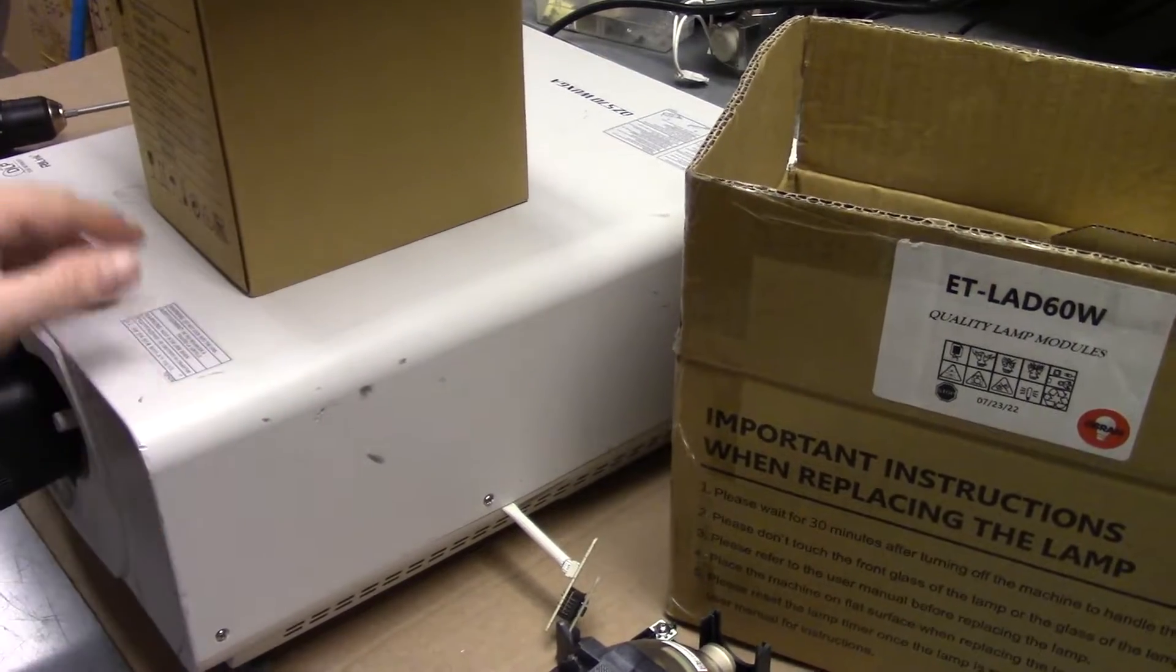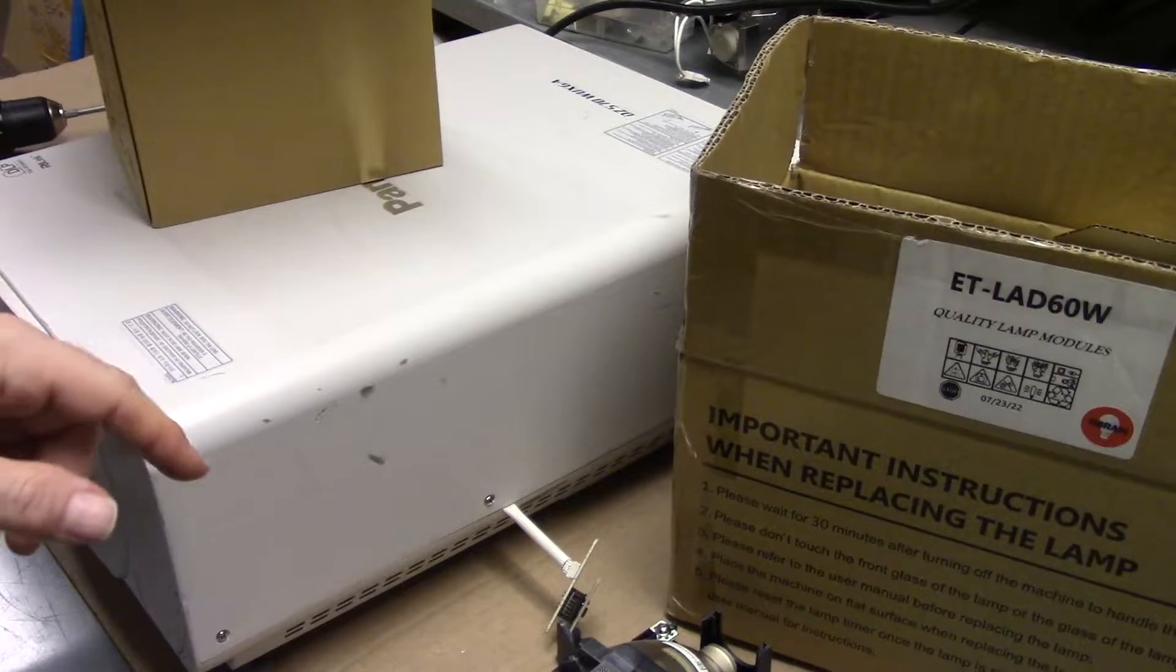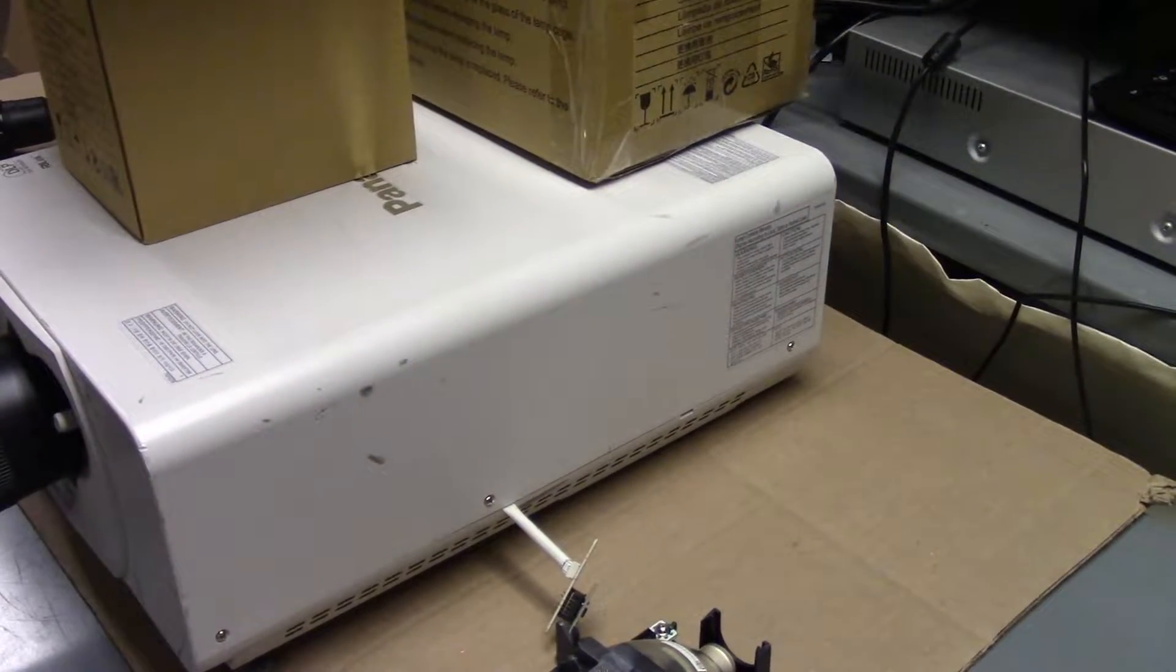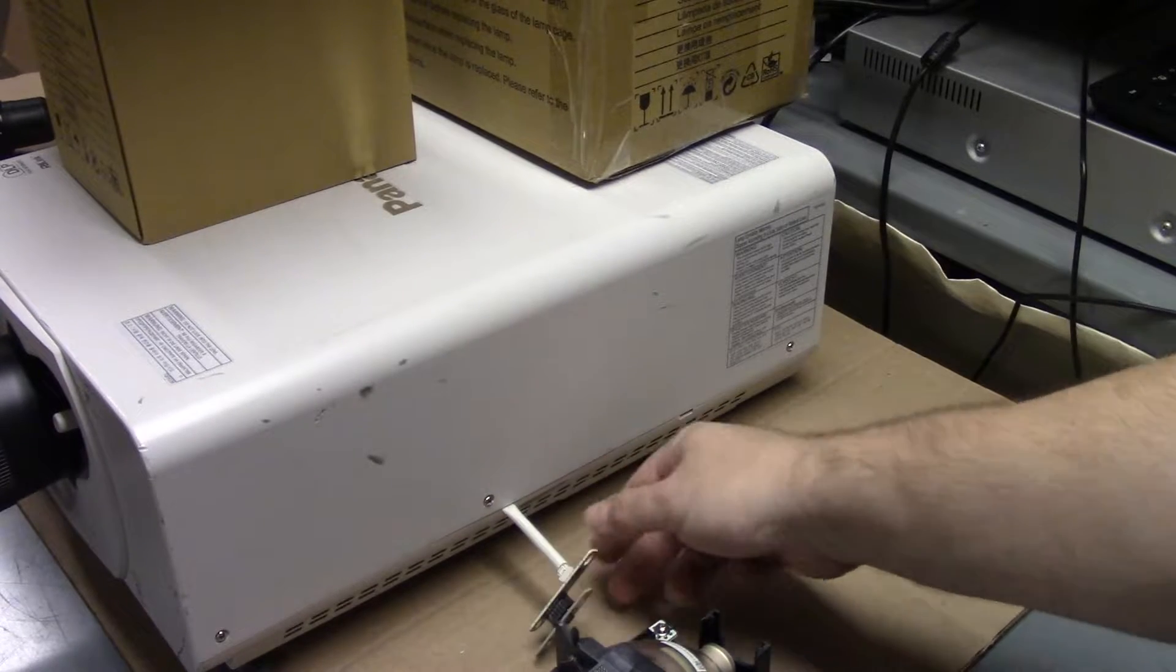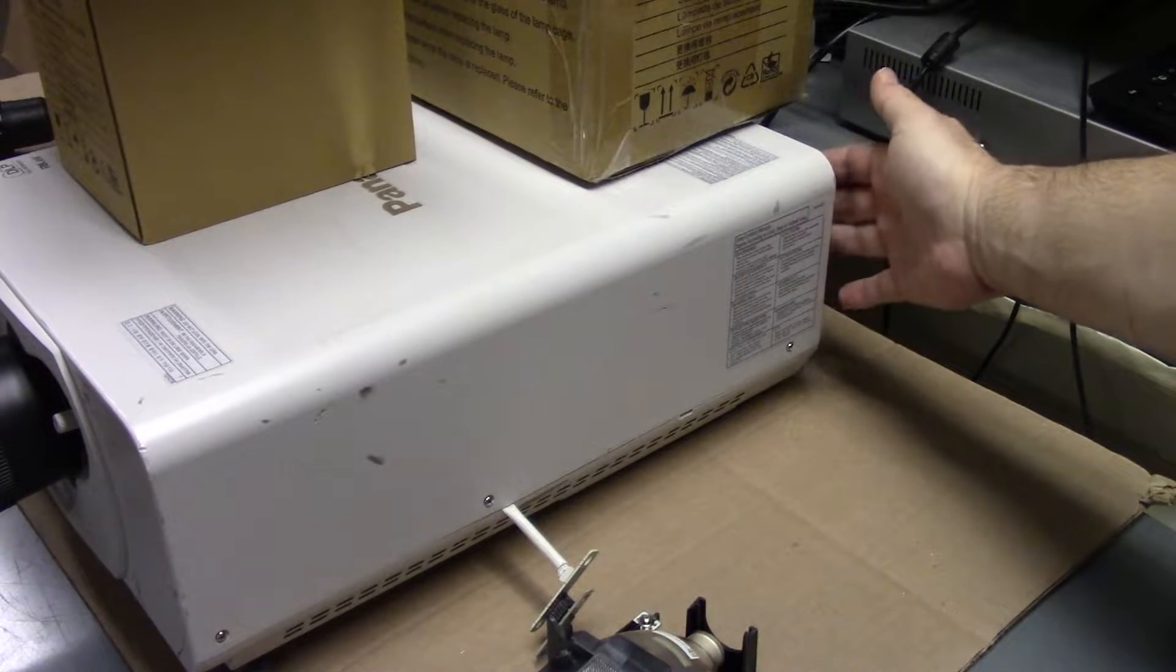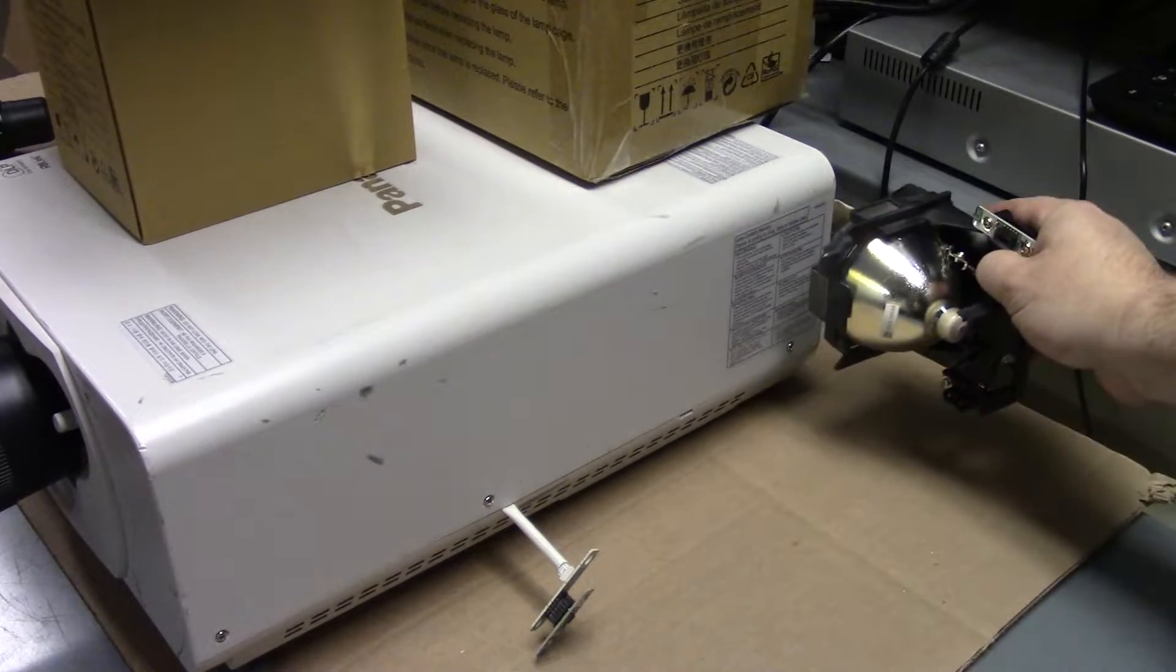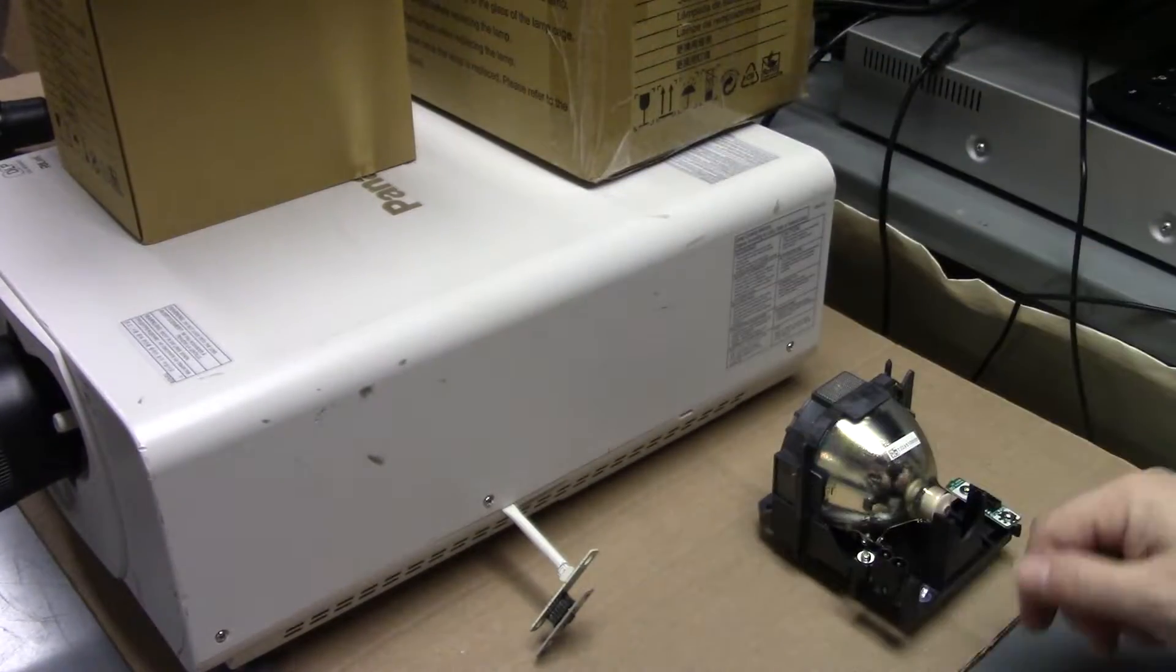So I have this DZ570U projector, I think I've had this in other videos, but I've modified it so that the connector for the timer is actually hanging out the side. Normally you have to open the back up, take the lamp out, it actually plugs in like that. This is only a single lamp projector so I have to check one at a time.